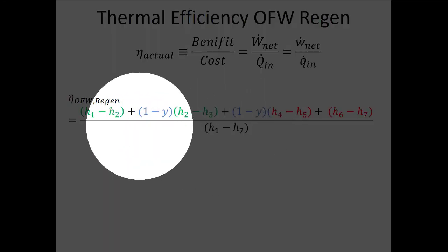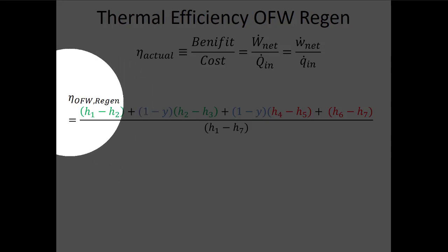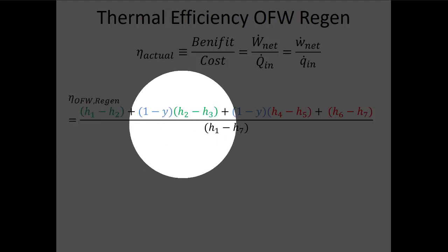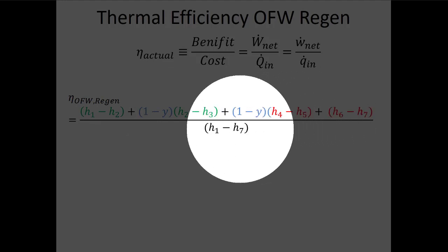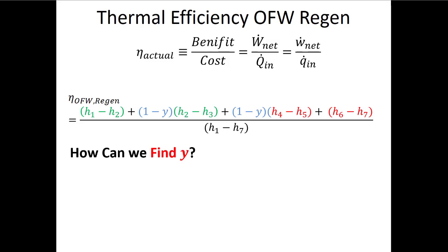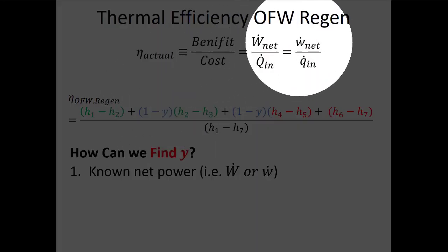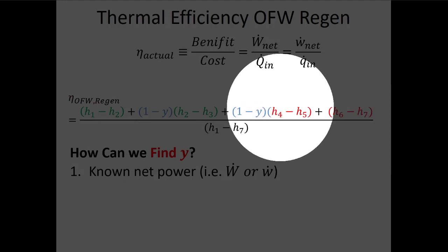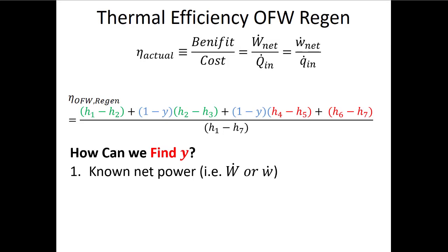For the open feed water heater regenerative Rankine cycle, the thermal efficiency is expressed as a function of the specific enthalpies at all the different states and of the undiverted mass flow fraction (1 − y). Sometimes we'll be given enough information to fix all the states but won't know the diverted mass flow rate y. One way to find y is if the problem gives the net power — if we know the specific net power and can figure out all the enthalpies, we can use that to find y.